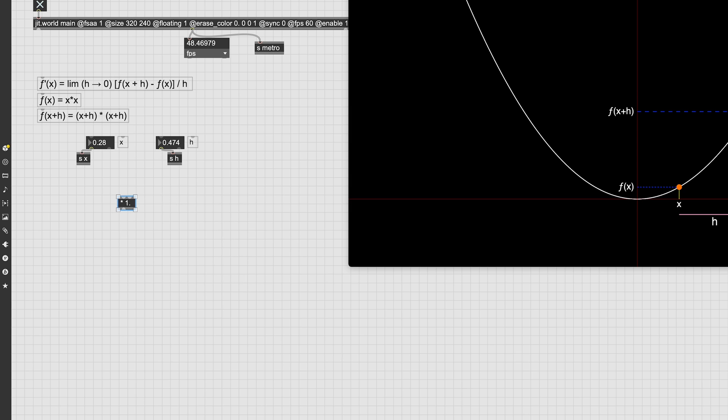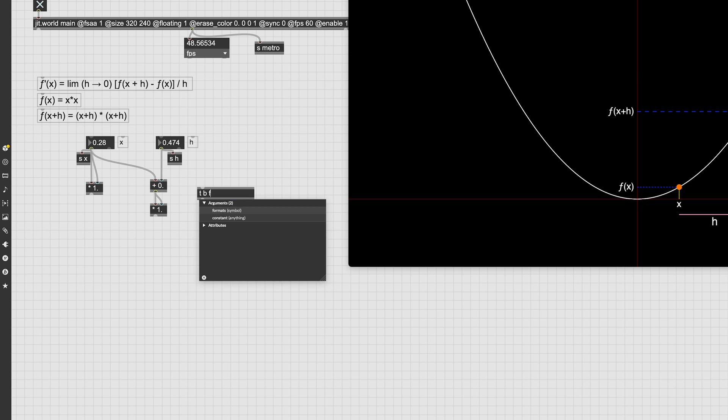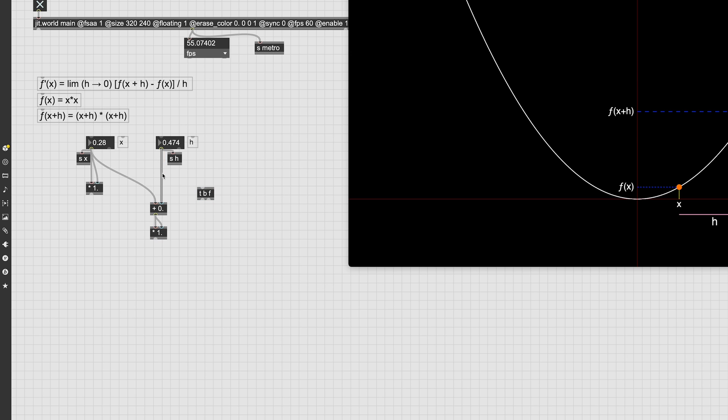So let's first calculate the f of x, so this will be x squared, and then let's calculate f of x plus h. So first we need to sum x plus h, and then we need to square that. Let's add a trigger bang float, so we are sure that when we change our distance, we will also trigger the calculation of f of x plus h. From f of x plus h, we now need to subtract f of x. We can again use trigger bang f to be sure to trigger this operation every time we change either one of those two numbers, and then we need to divide by h. We can use the receiver here. Great, so this will be our slope.